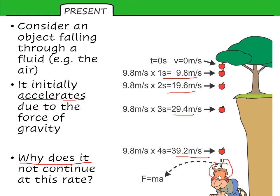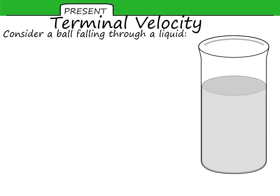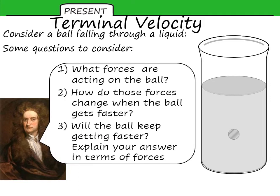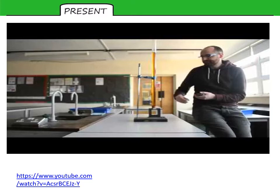Why doesn't this continue in real life? Consider a ball falling through a liquid such as thick viscous oil — we'll be back to the apple later. Some questions to consider, and let's let Isaac Newton ask them himself: what forces are acting on the ball downward and upward? How do these forces change, or do they change, when the ball gets faster? Will the ball keep getting faster until it hits the bottom? Explain your answers in terms of forces. You will find that the ball reaches a constant speed quite rapidly and descends through the tube, because of frictional drag forces as it moves through the viscous oil.